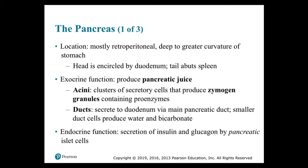The pancreas: it is mostly retroperitoneal, deep to the greater curvature of the stomach, with the head encircled by the duodenum and the tail abutting the spleen. It has both exocrine and endocrine functions. Its exocrine function produces pancreatic juice — acini (clusters of secretory cells) produce zymogen granules containing proenzymes, and ducts secrete these juices into the duodenum via the main pancreatic duct. Smaller duct cells produce water and bicarbonate. Its endocrine function secretes insulin and glucagon from pancreatic islet cells.